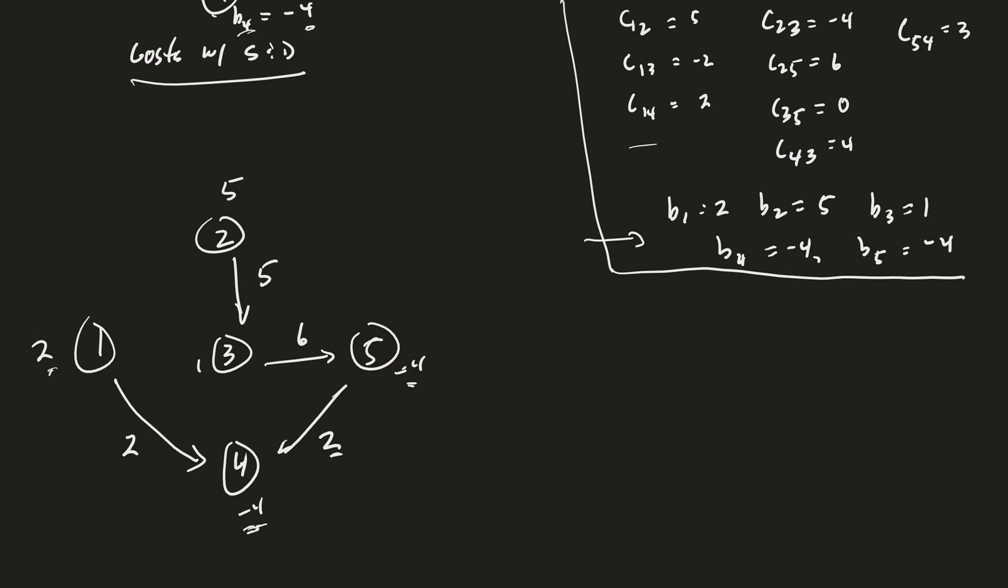And of course, you could always double-check your answers formally by using the bi equals outflow minus inflow. Good. Now, remember that this is a spanning tree. So this is a basic solution. And also, it's feasible, right? It's feasible because our xij are positive. 2, 5, 6, 2.